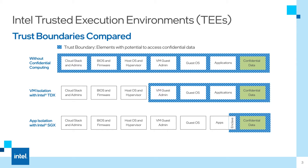Microsoft Azure has a public preview of Intel TDX using their DCES V5 and ECES V5 series confidential VMs. If you need the absolute smallest trust boundary, then Intel Software Guard Extensions or Intel SGX should be considered. It moves the trust boundary all the way down to the application, even as far down to a single function.